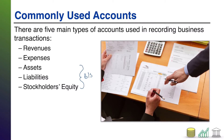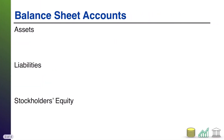The company will organize them into those buckets — they'll put all the assets together, all the liabilities together, all the stockholders' equity together. Now we're going to deep dive into these three types and give you some examples of what goes in there. But first, let me talk briefly about what exactly the balance sheet tells you about a company.